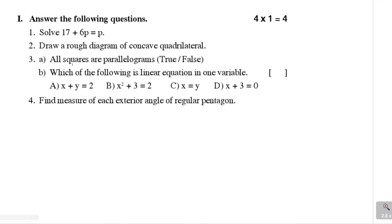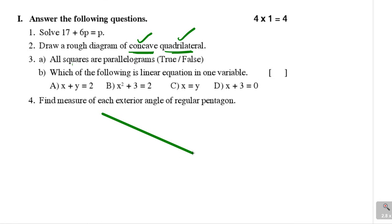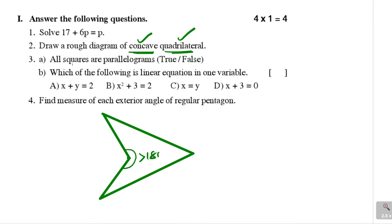Let us see the second problem: Draw a rough diagram of a concave quadrilateral. Quadrilateral means it has 4 sides. Concave means at least one interior angle must be more than 180 degrees. We can draw the concave quadrilateral with four sides such that this angle is more than 180 degrees. So this is a concave quadrilateral.